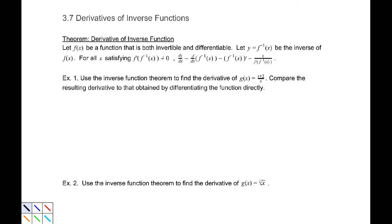Now we're going to apply that to a function: g(x) equals (x+2)/x. We're going to compare the result by differentiating it in a slightly different way. First, we need to figure out what the inverse of (x+2)/x is. The inverse of that g(x) function is f(x) = 2/(x−1).